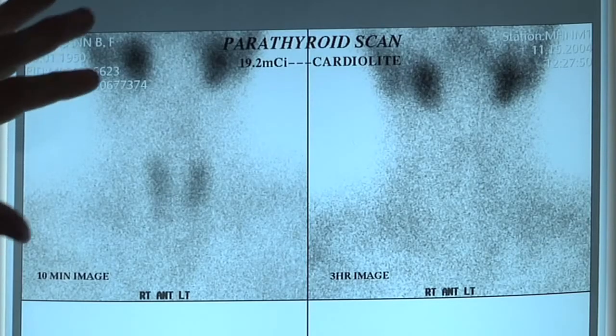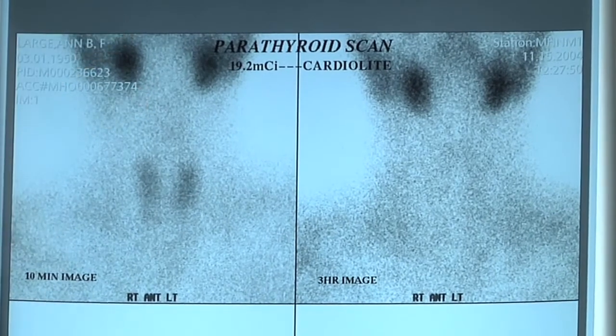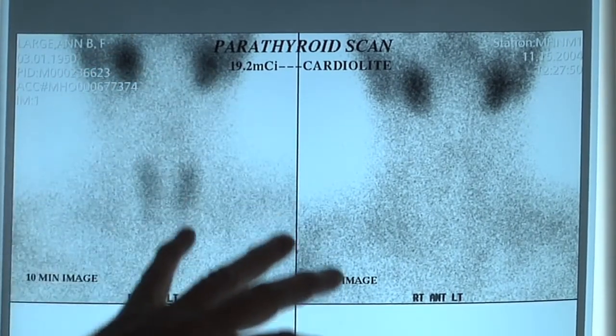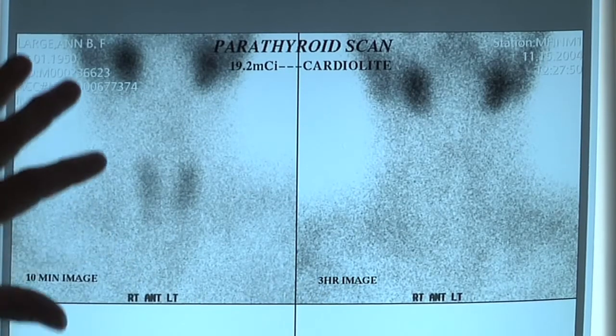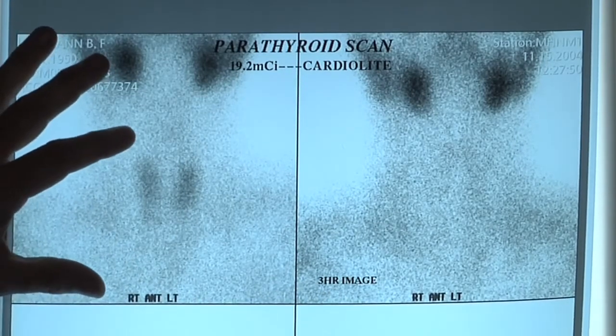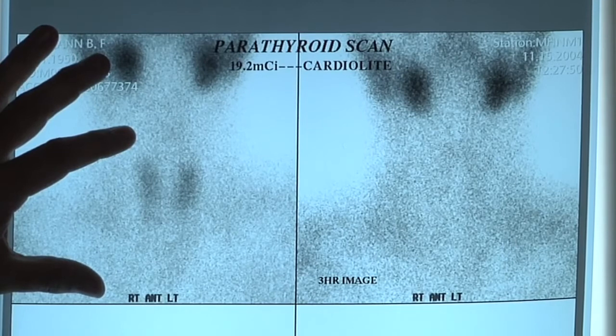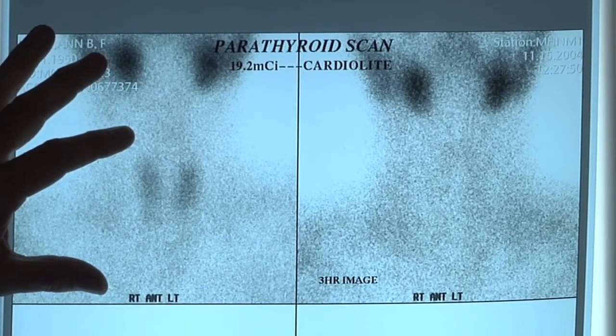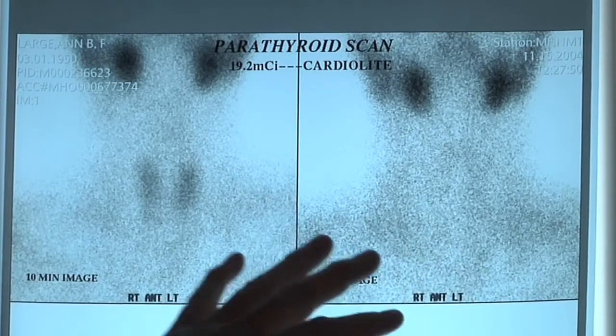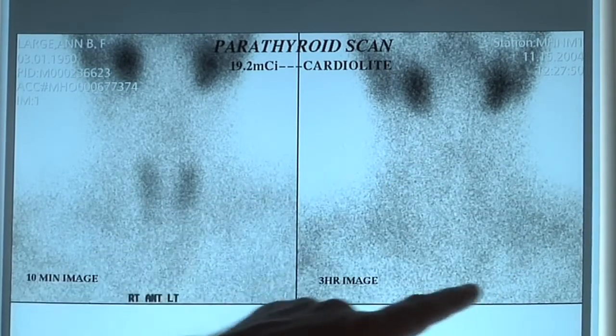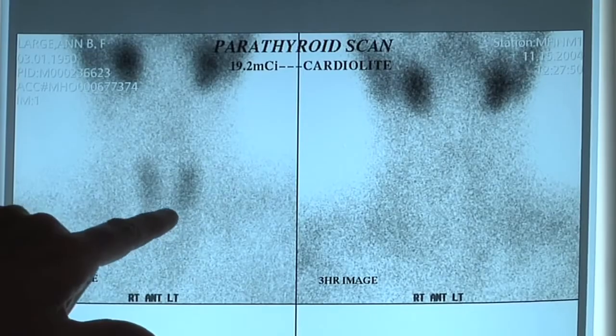The first example we have is this scan right here. Scans should be very clean, crisp, and in focus. This particular patient came to us after already having a failed parathyroid operation. They had an operation that took several hours, didn't find the parathyroid tumor, and this is the scan that she had prior to her first operation. Notice it's blurry. It's not in focus. You can't even really see the thyroid gland.